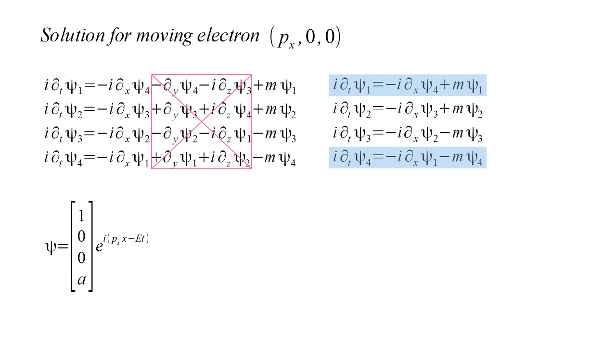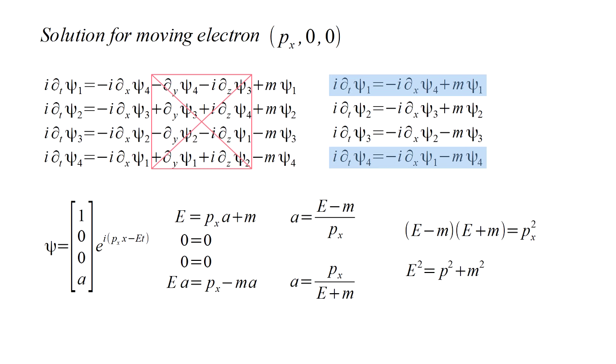Therefore, if we have a psi 1 component, we will necessarily have a psi 4 component also. Let's call the unknown coefficient of the psi 4 component a. The first equation reduces to e equals px a plus m. The second and third equations are trivial. And the fourth equation reduces to ea equals px minus m a. Solving the first and fourth equations, we get a equals e minus m over px and a equals px over e plus m. For there to be a solution, these expressions have to be equal. Setting them equal, we find that the condition for a solution is simply that e squared equals p squared plus m squared. This is always true, so we indeed have a solution.